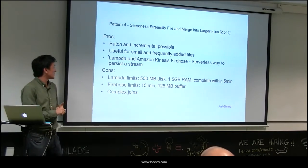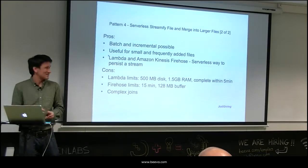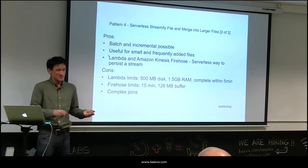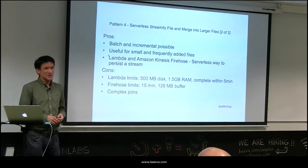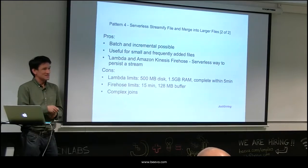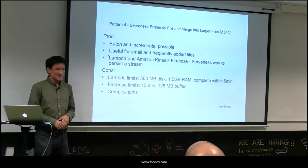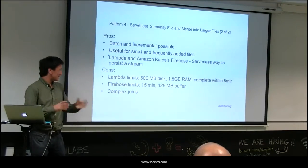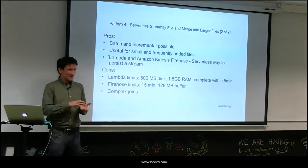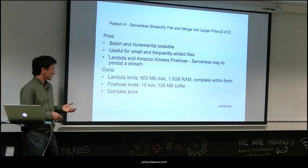Like the earlier pattern, you can also scan the whole of S3 and send one message per file to process all files in parallel — a quick way of doing it. Pros: both batch and incremental ways of processing data. Very useful for small and frequently added files — you don't have to think about spinning up your Spark cluster or EC2 containers. A file gets added to S3, triggers a Lambda, processes the data, and sends it onto the stream. The combination of Lambda with Kinesis Firehose is a nice serverless way to persist a stream. Downsides: Lambda size limitations apply, and if you want to aggregate data larger than 128 megabytes or 15-minute windows, this pattern won't work. Complex joins are also not supported.